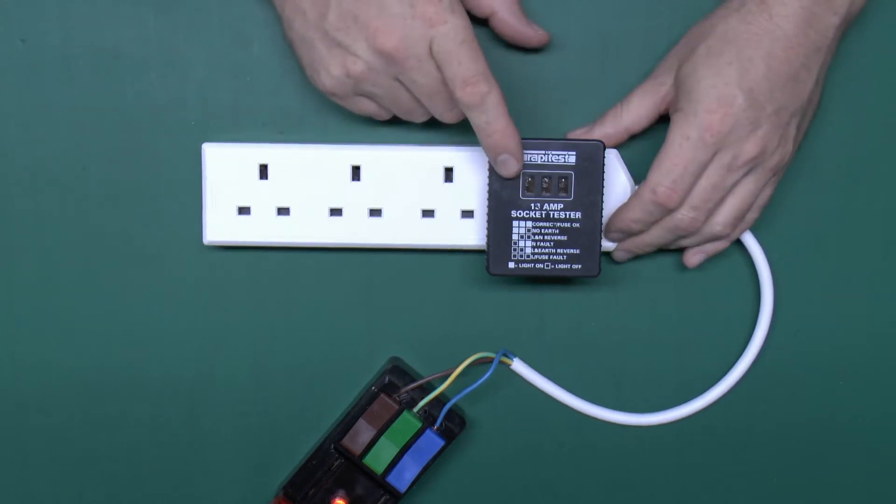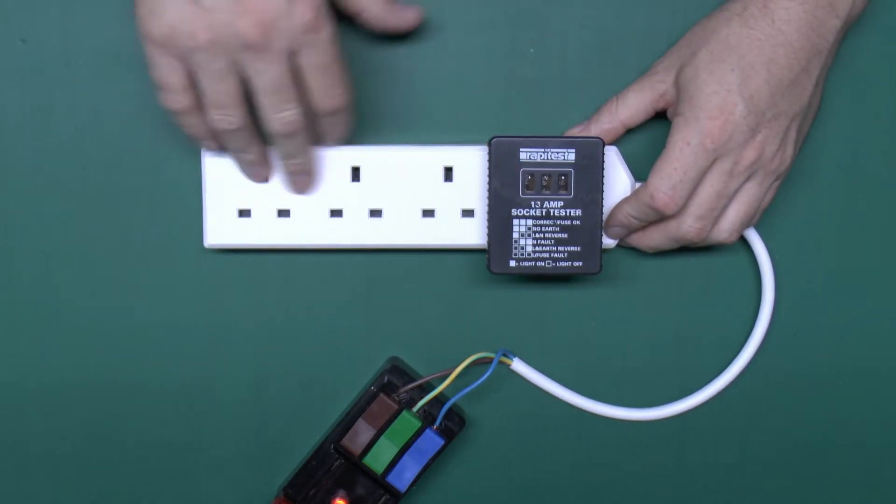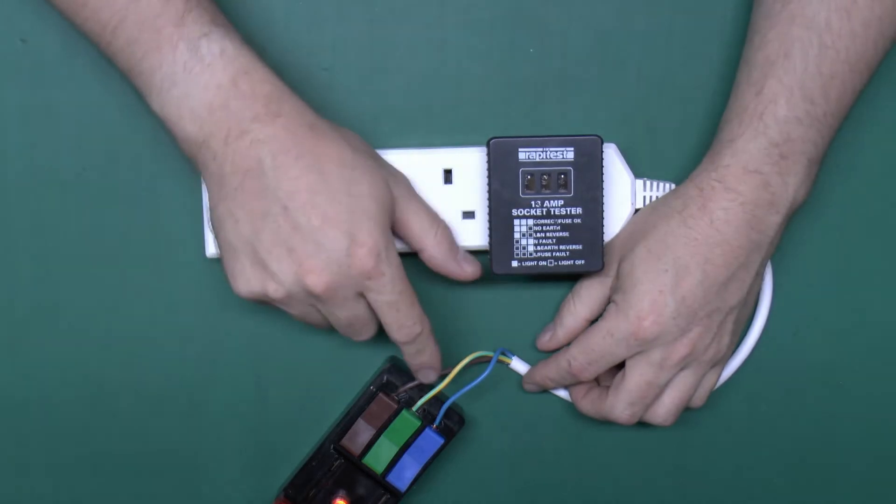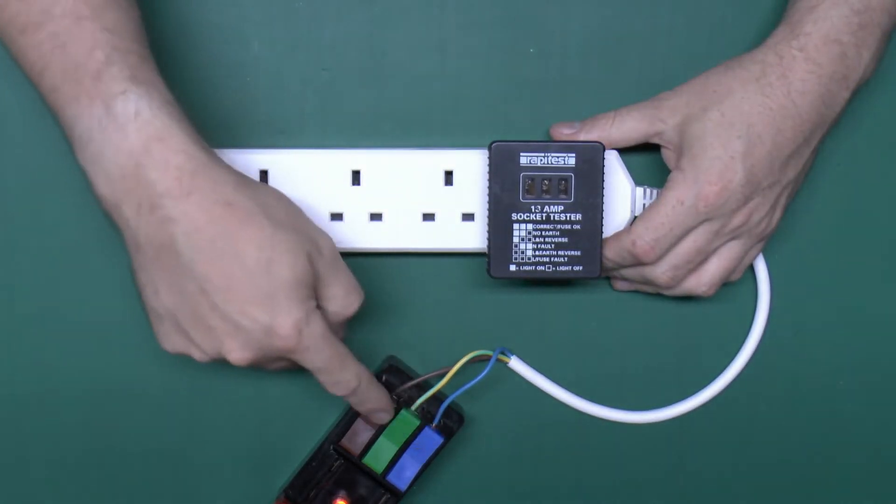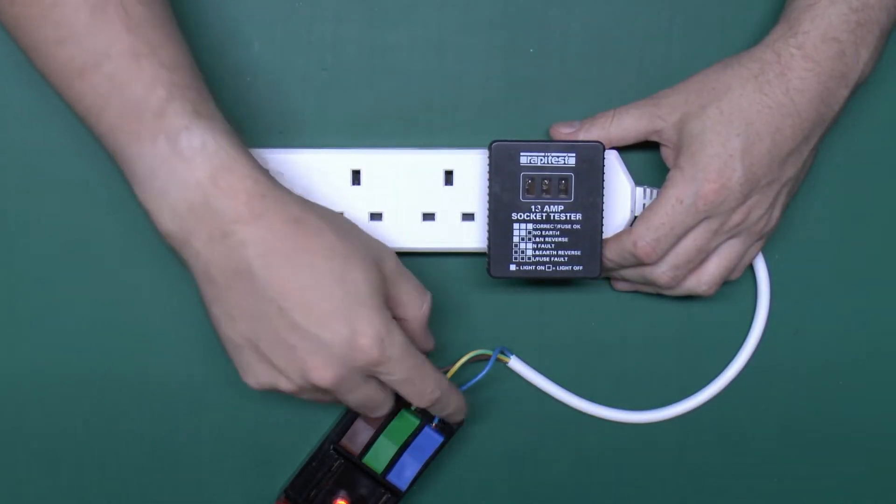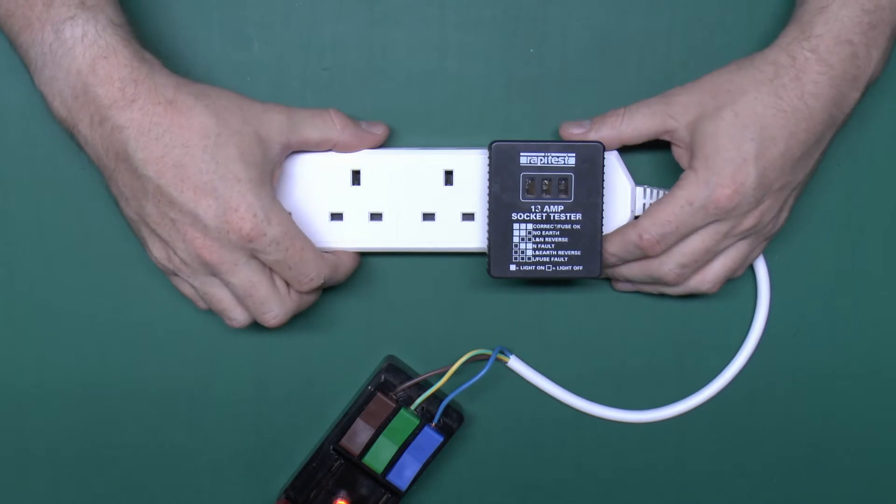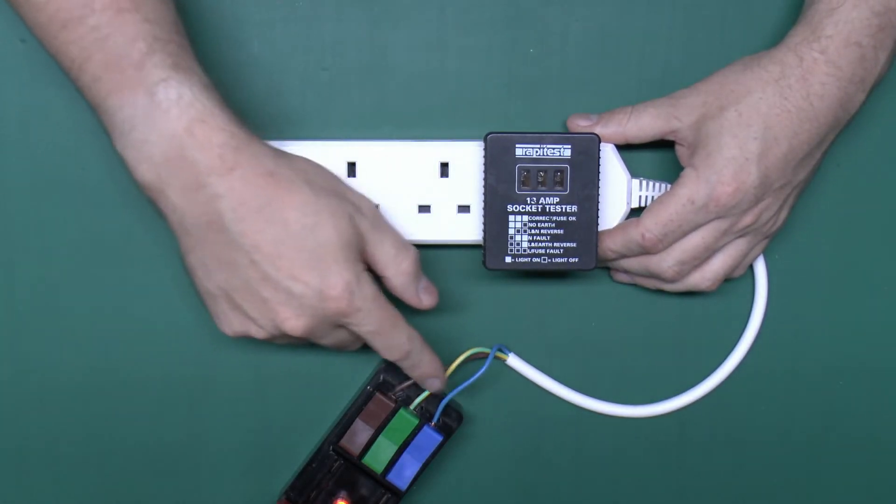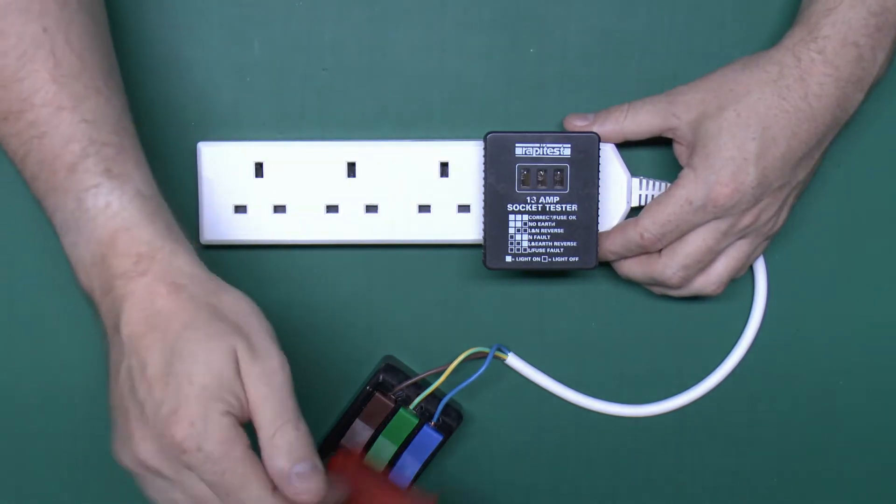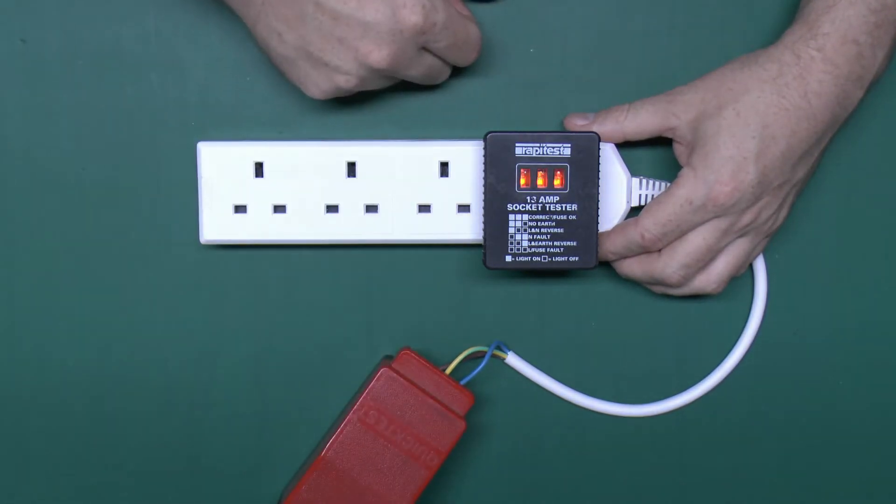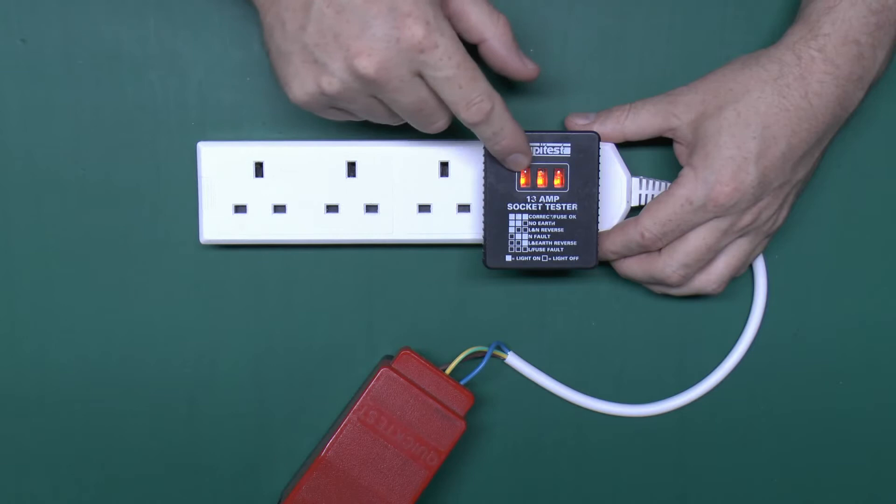So what I've got here is the testing device in one of these four-way extension blocks. The lead here, I've taken the plug off so I can connect it into this testing block so that will allow me to easily change the connections around in various different ways. This of course is the correct or proper way of doing things, so in theory the three lights should illuminate, and sure enough they do.